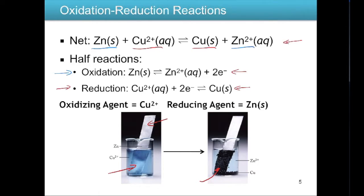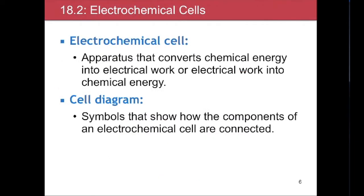If we set up the reaction that way, it's not really doing anything useful — all we're doing is depositing copper onto the zinc. But if we separate those two components, keeping the zinc half reaction separate from the copper half reaction, what we get is called an electrochemical cell: an apparatus that converts chemical energy into electrical work, or electrical work into chemical energy.